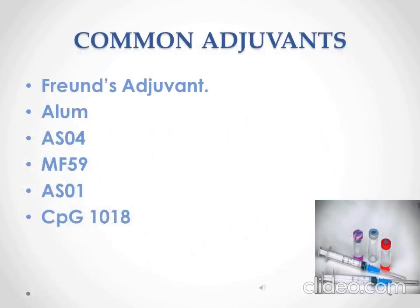Freund's Adjuvant is perhaps one of the most commonly used adjuvants in research today. It is used to trigger a humoral antibody inflammatory response for the production of high-titer antibodies. There are two types: Complete Freund's Adjuvant (CFA), which is a water-in-oil emulsion containing inactivated mycobacteria, and Incomplete Freund's Adjuvant (IFA), which is the same water-in-oil emulsion but does not contain any mycobacteria.